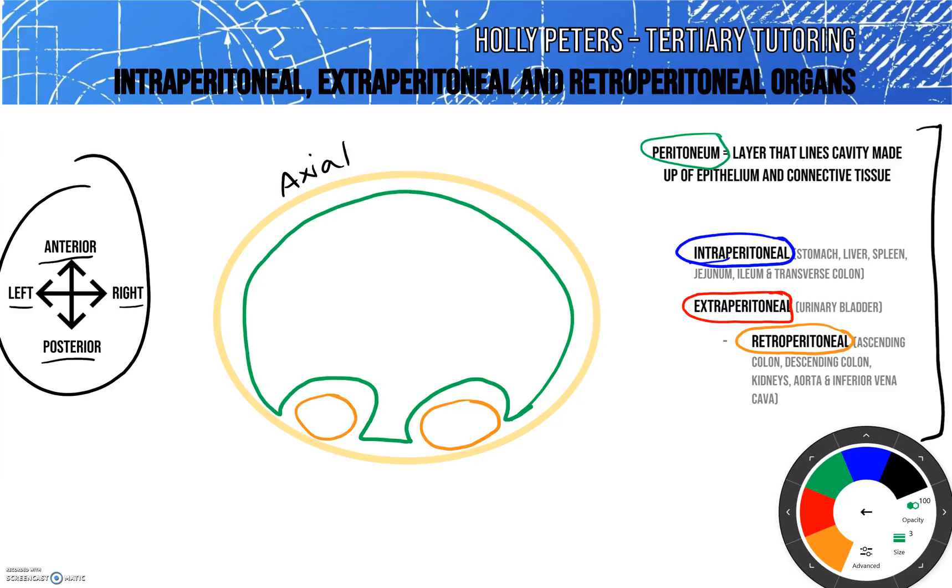It's important to know that some organs, different parts of them might be considered intra or extraperitoneal, and a good example of this is the duodenum.